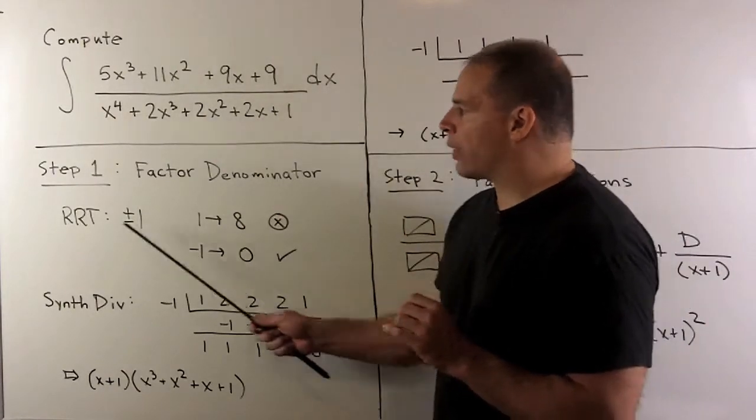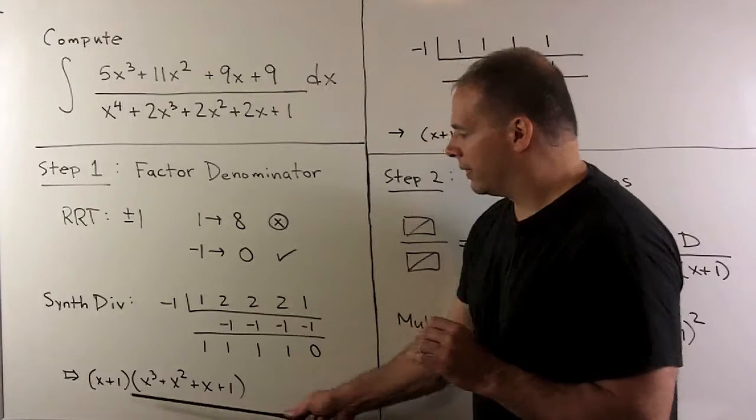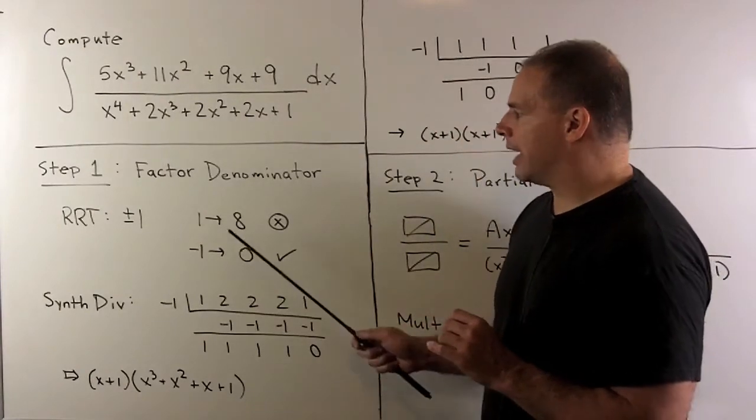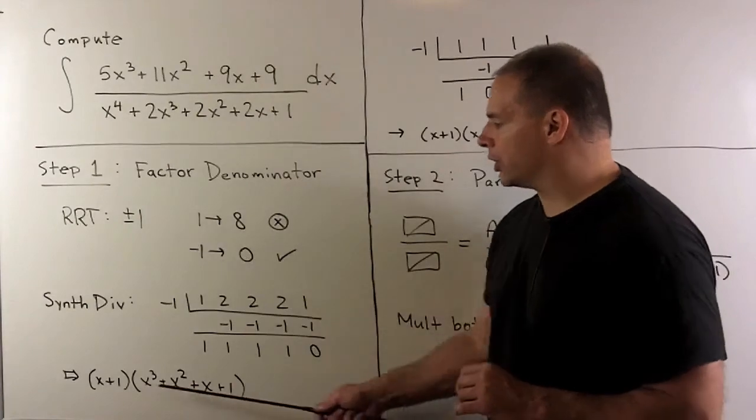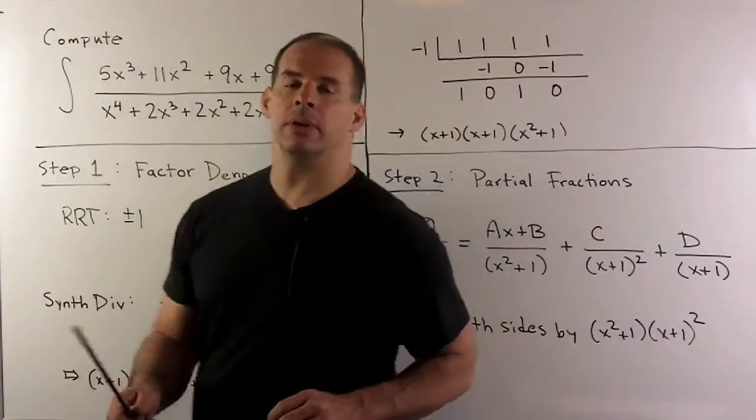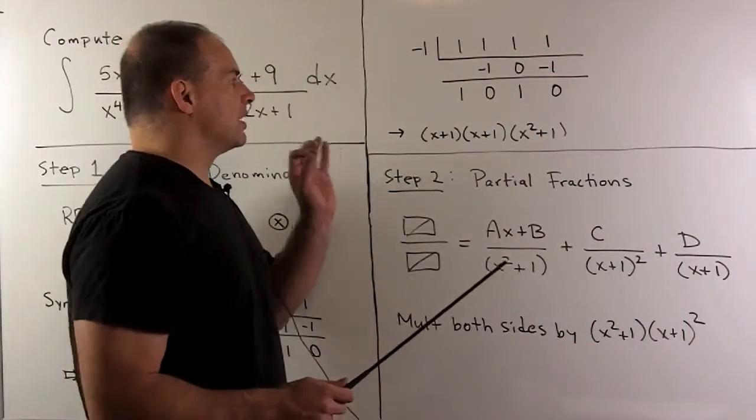We try the rational roots test again with this factor. Again, the 1 is going to go to something non-zero. Minus 1 is going to go to 0.